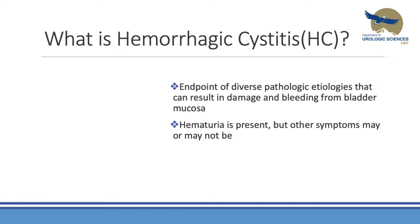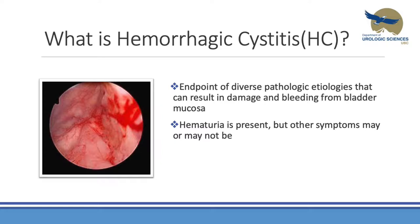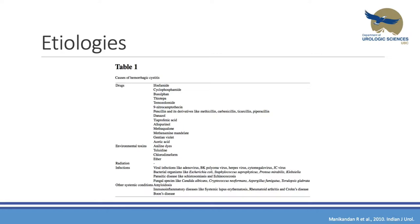Hematuria is typically present, as stated in the name, but other symptoms can be present as well. A lot of these patients can present with lower urinary tract symptoms: frequency, urgency, dysuria. This is a familiar look when we go in with a camera — we see diffuse erythemic areas with telangiectasis. You can see from the table that lots of things can cause it; I'm going to touch on the most common ones that we come across.